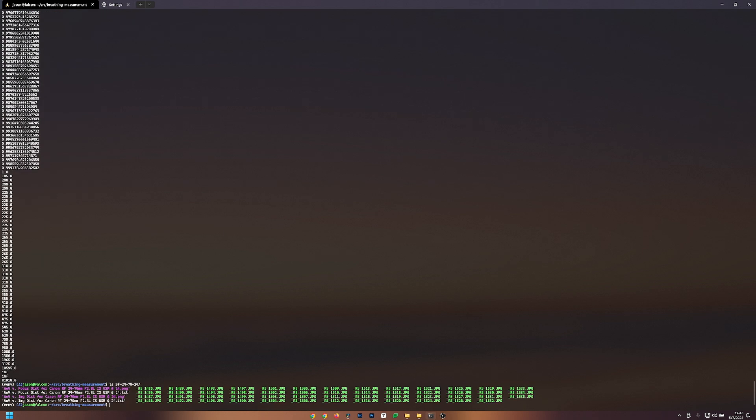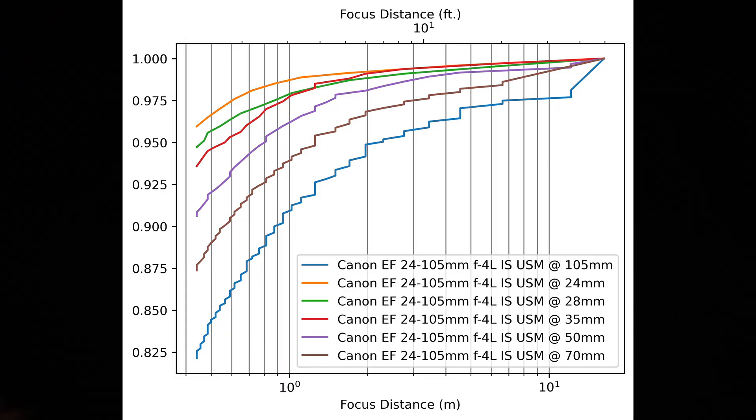Now, since the infinity focus position tells us the lens's true angle of view, I can compare each frame to that infinity frame to determine how much the angle of view is changing, and then plot that against image distance, focus position, focus distance, or whatever I really want.